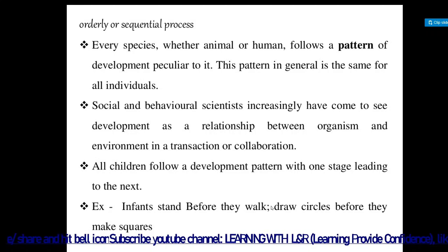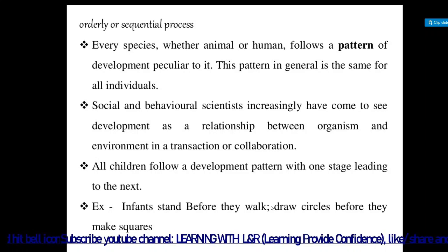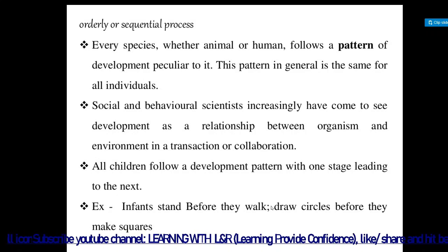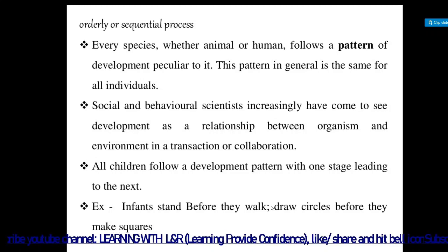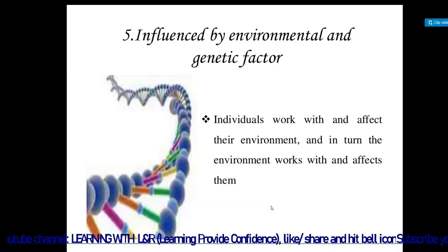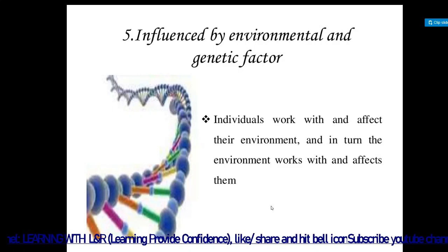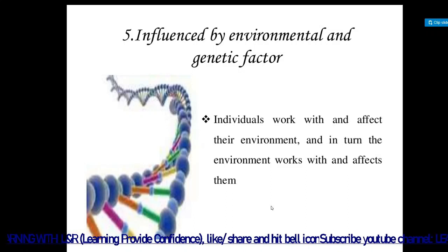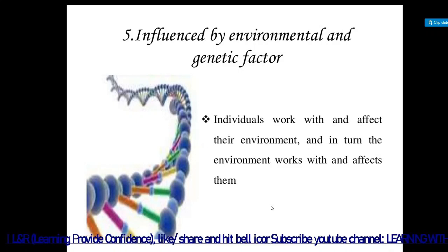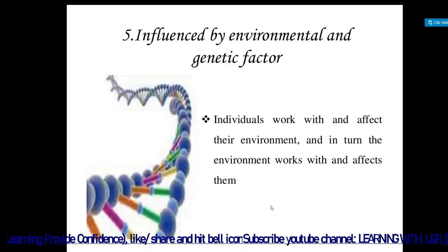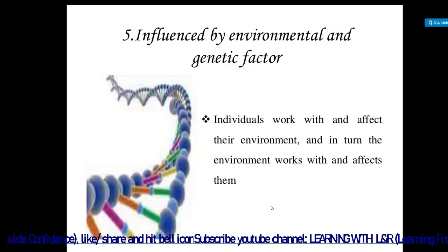This pattern is generally the same for all individuals. Social and behavioral scientists increasingly see development as a relationship between organism and environment — a transaction or collaboration. All children follow a developmental pattern with one stage leading to the next. Infants stand before they walk and draw circles before letters. Development is also influenced by environmental and genetic factors — the kind of environment the child lives in and the DNA and genetic factors present in their parents.